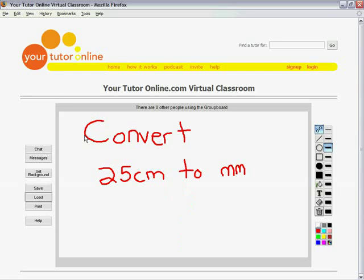Let's say we want to convert 25 centimeters to millimeters. Well, we know that there are 100 centimeters in 1 meter, and we also know that there are 1,000 millimeters in 1 meter.